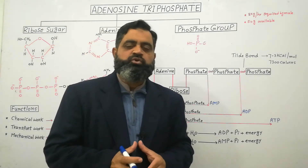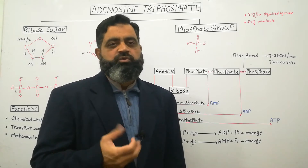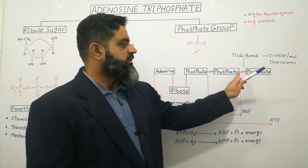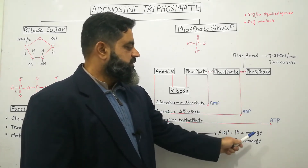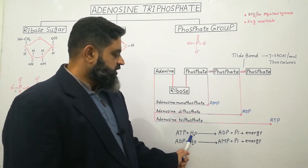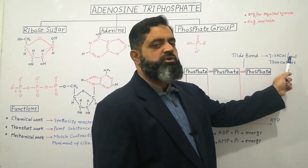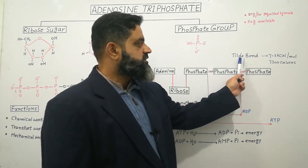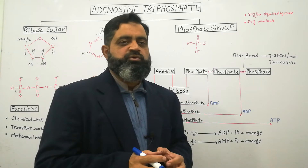Whenever we need to do some kind of work — like blinking your eyelashes, writing, thinking, sitting, or moving — you need energy, and this energy comes from the breakdown of the ATP molecule. When our cells break down ATP, the terminal phosphate group is hydrolyzed. When this bond breaks, ATP changes into ADP. The reaction is: ATP + water → ADP + inorganic phosphate + energy. The energy released is 7.3 kilocalories per mole. This energy comes from the breakdown of the tilde bond between the two phosphate groups. Our cells only break the terminal phosphate group of ATP to obtain energy.